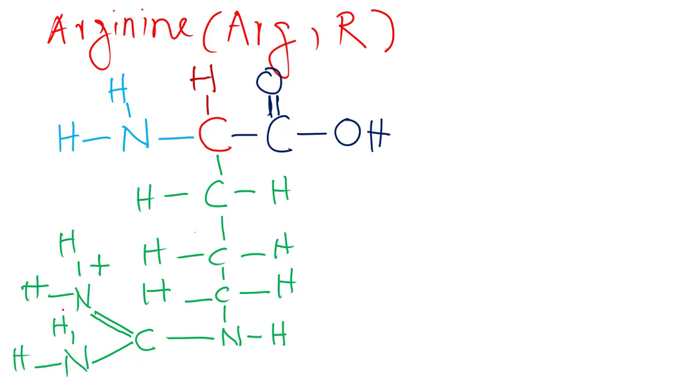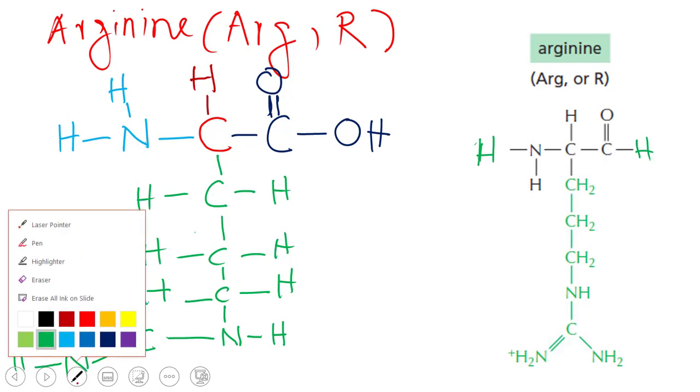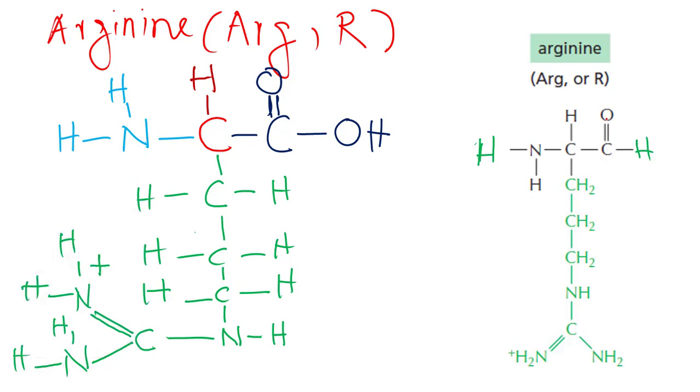So this is our arginine with its side chain CH2 CH2 CH2 NH, and with that N we have carbon, and to that carbon again two NH2 groups are attached. Here is the structure as you can see. We have carboxylic group, the amino group, and then the side chain. So let's highlight them as usual.